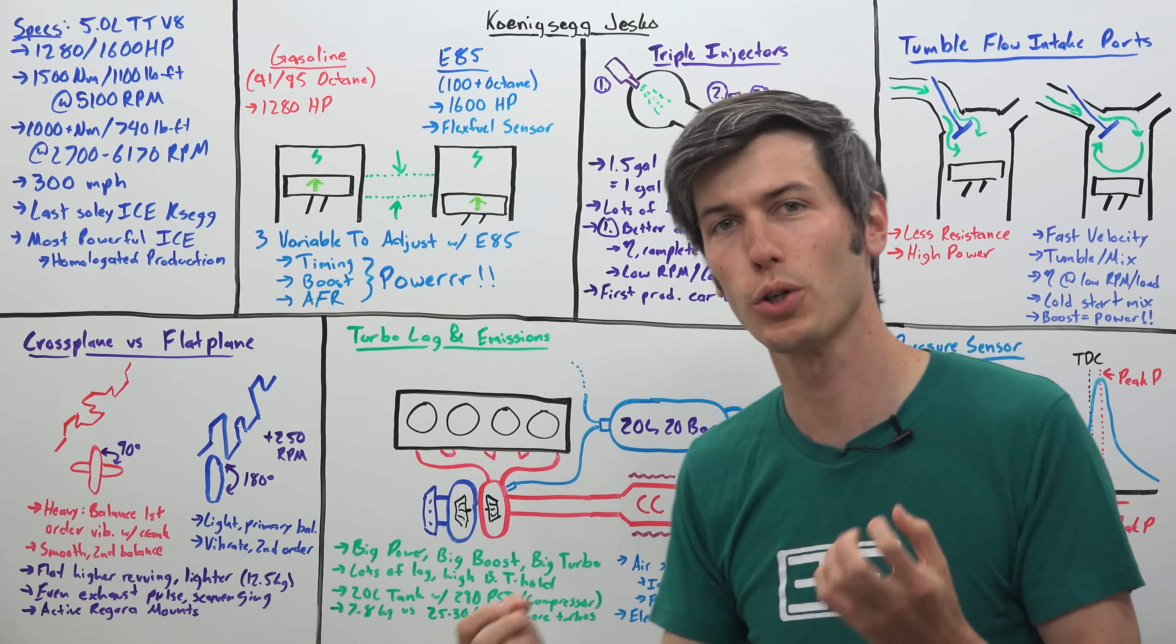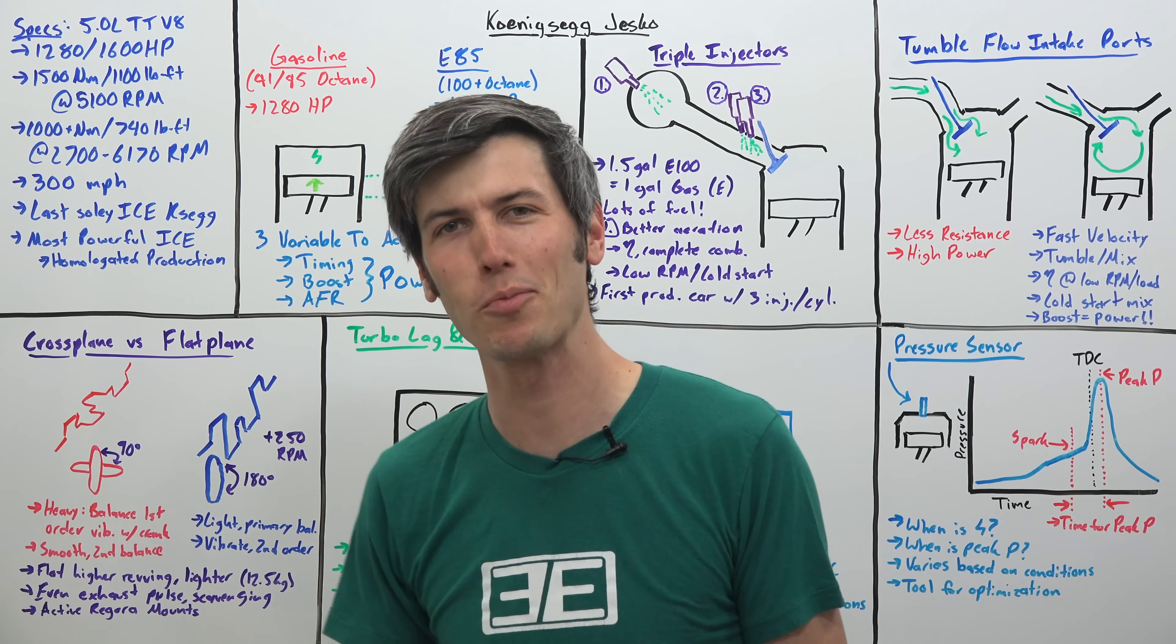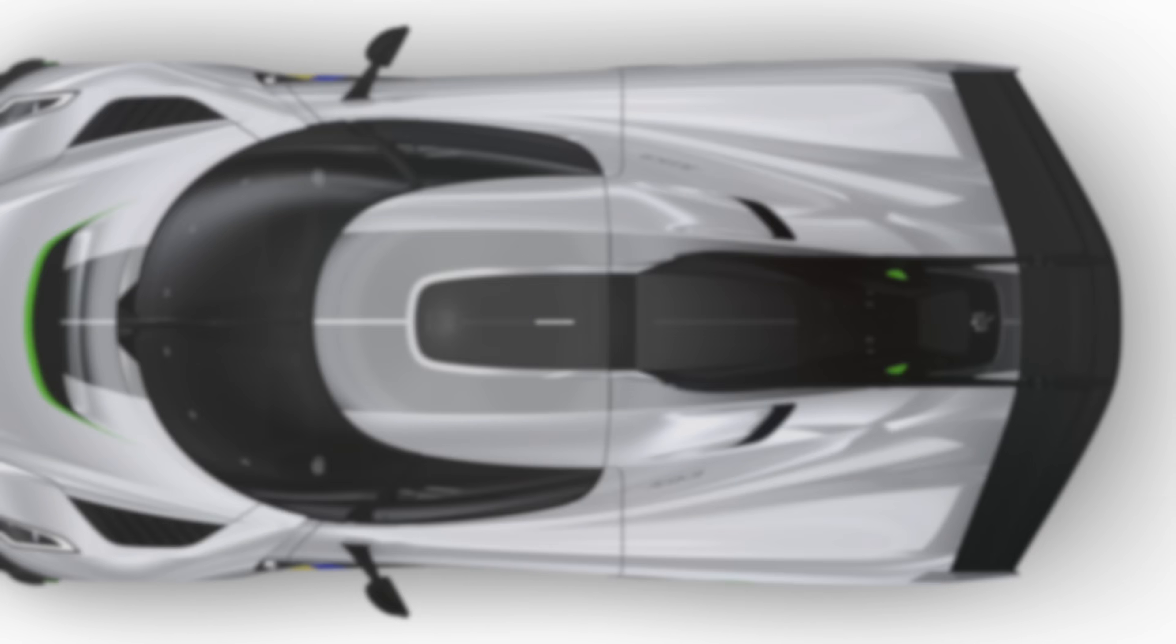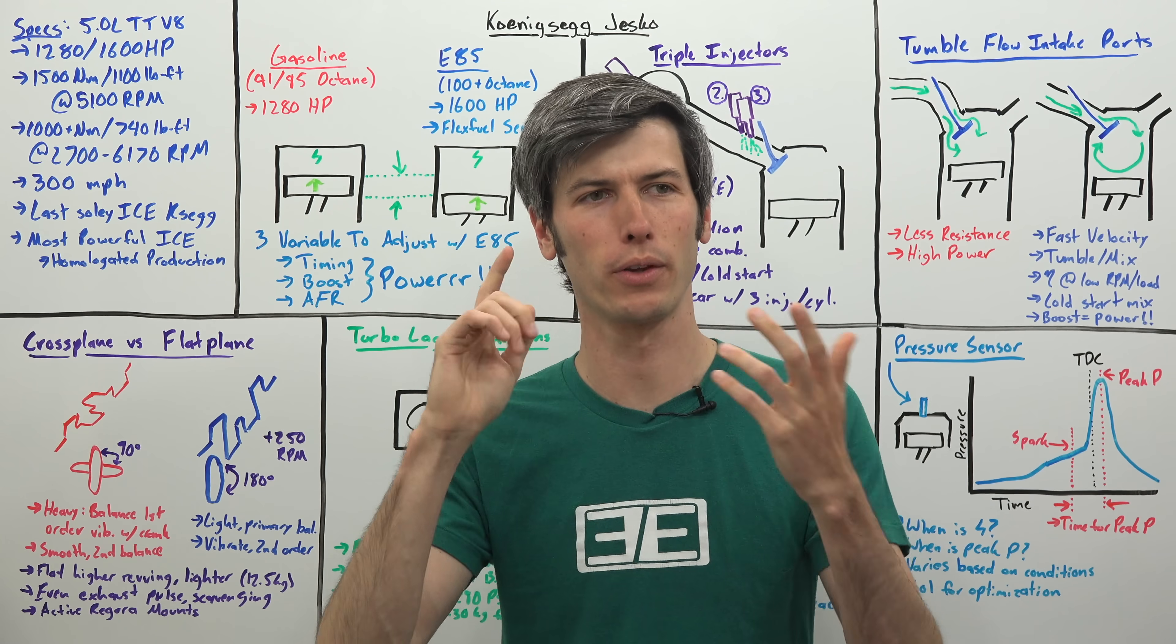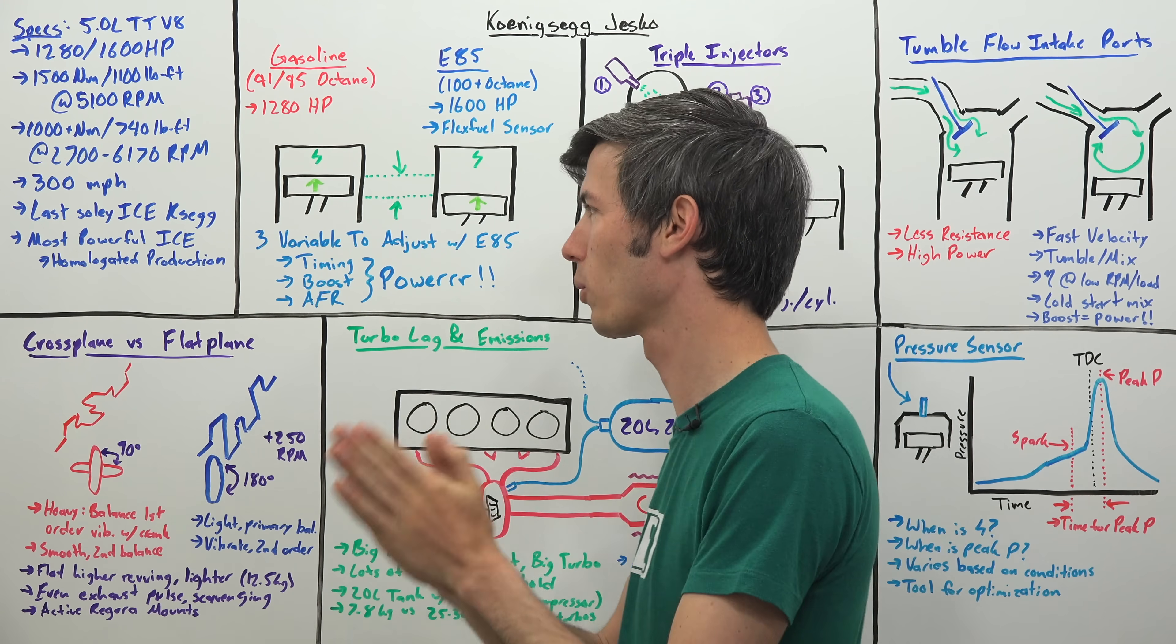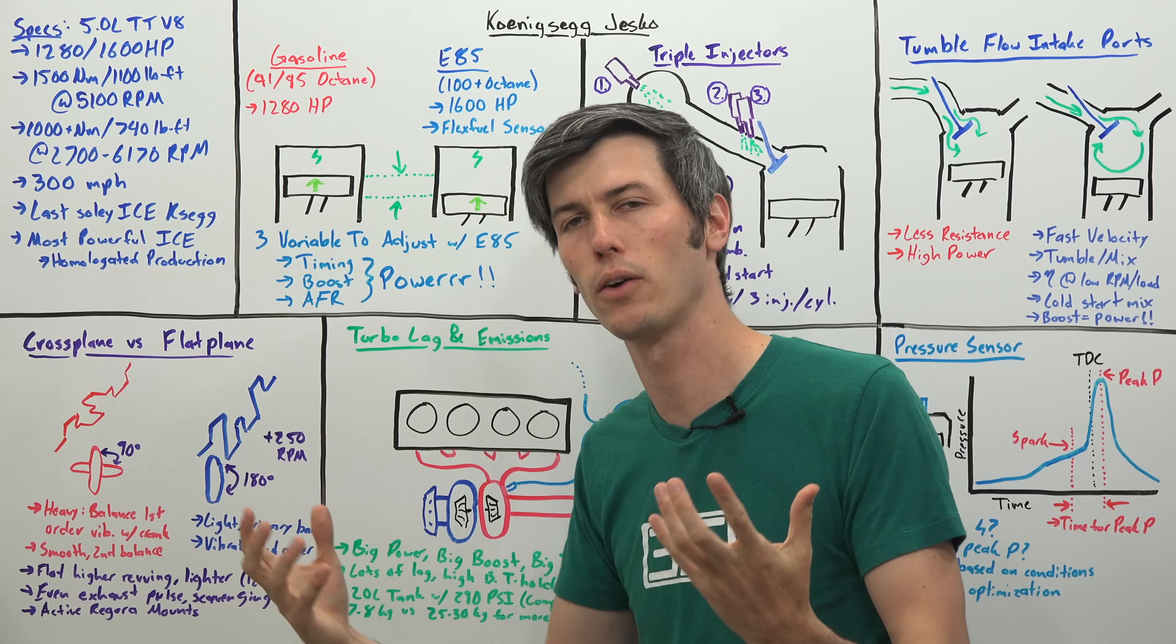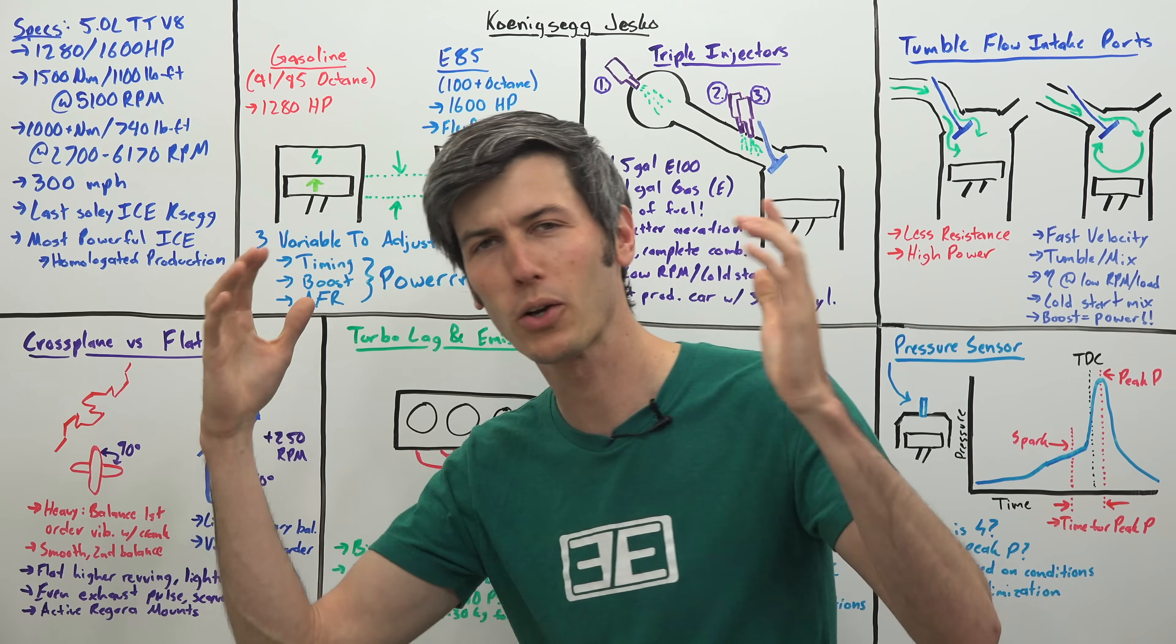Koenigsegg claims that this vehicle should be able to reach 300 miles per hour. I really hope we see a production car making this magical number. This will likely be the very last purely internal combustion engine powered Koenigsegg. The future will have hybrids much like the Regera and electric cars that Koenigsegg will be developing. They're going out with a bang.